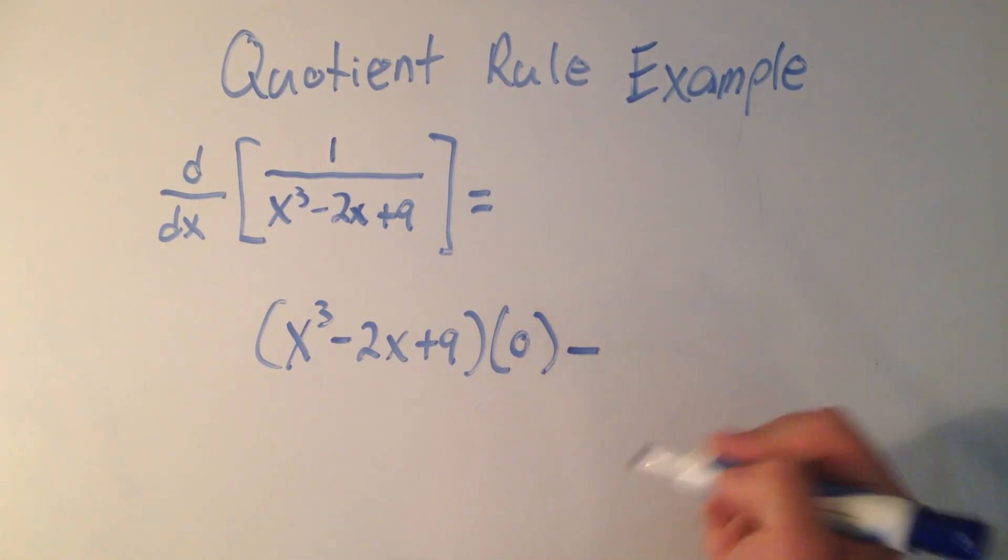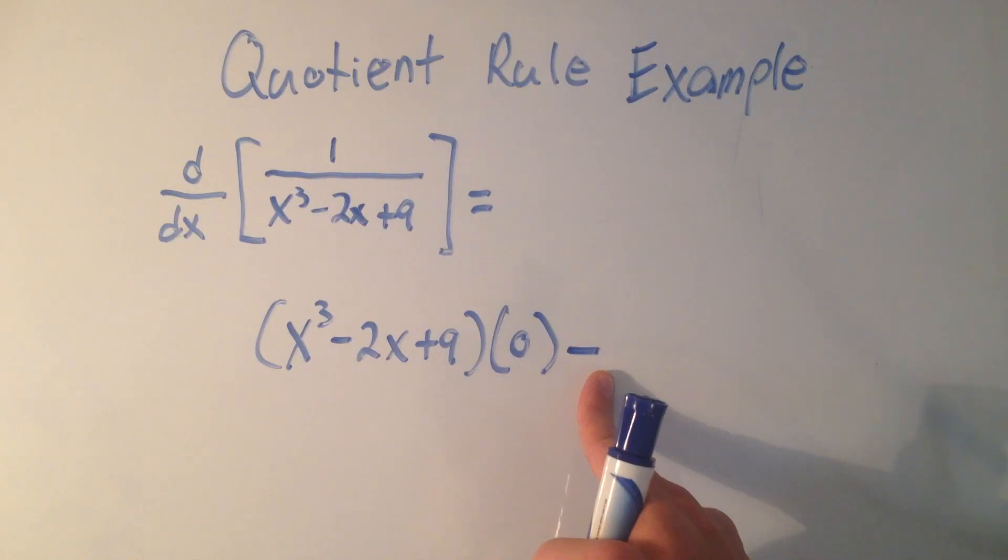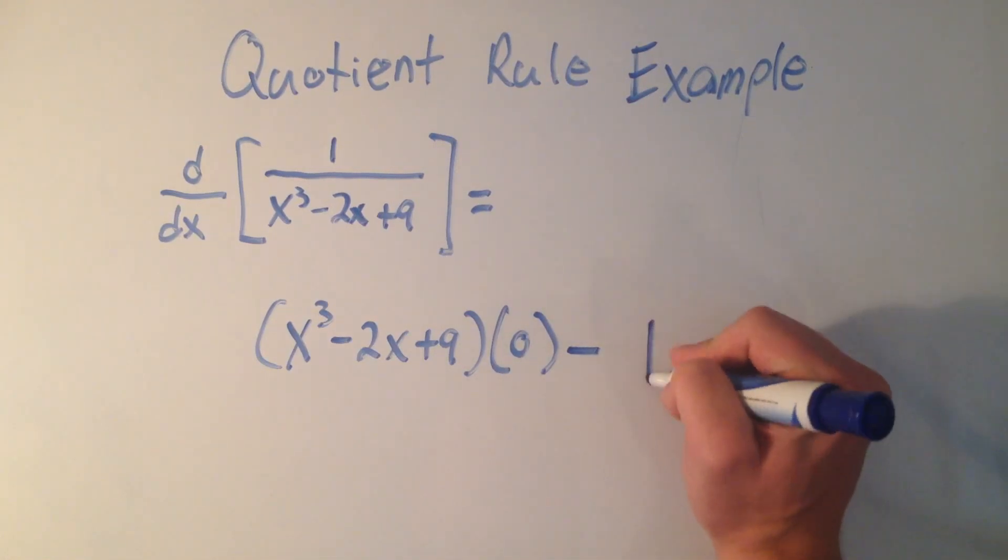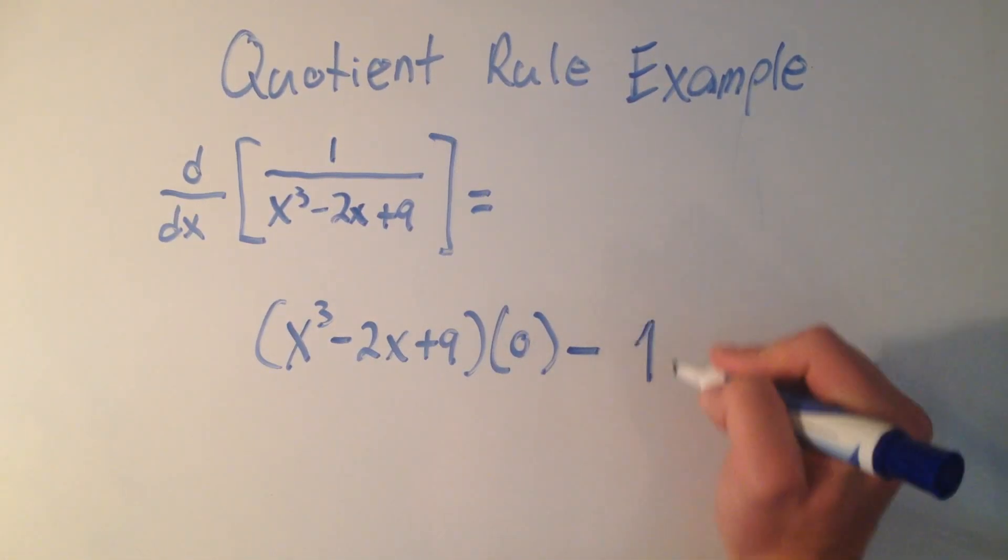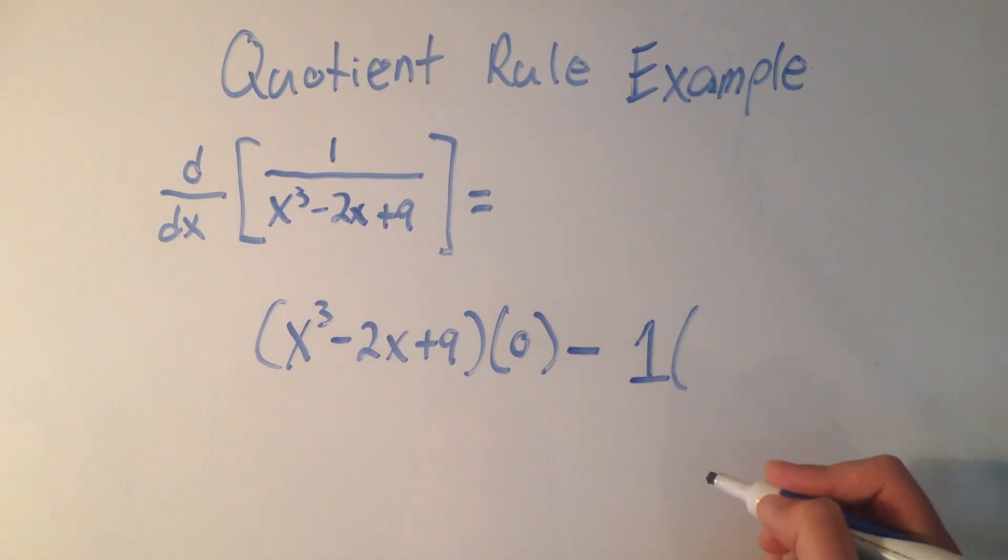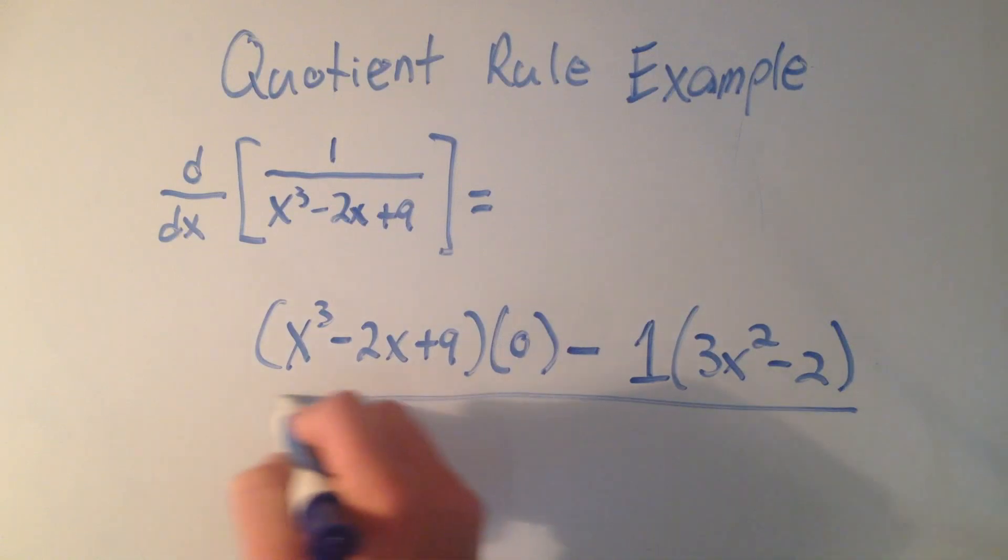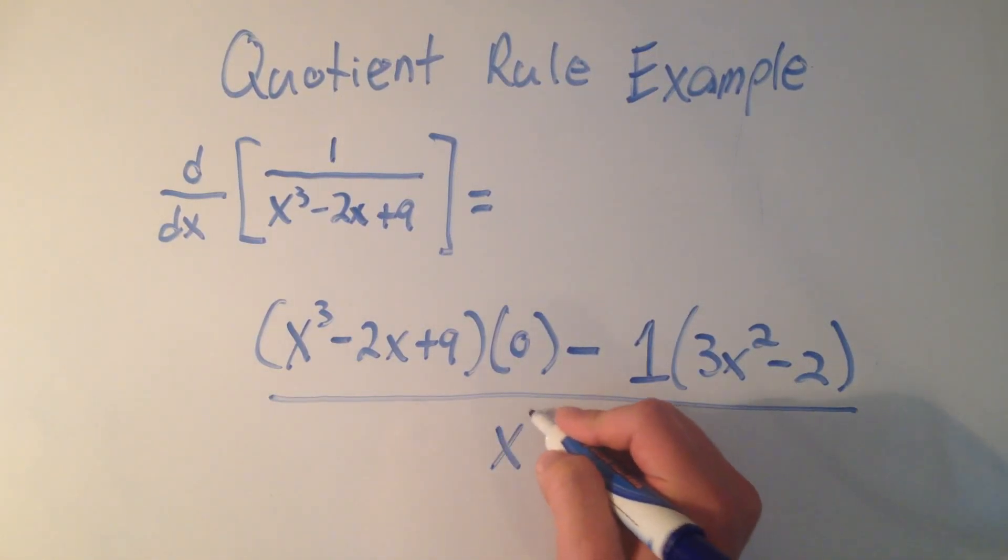Quotient rule says minus, product rule is plus, quotient rule is minus. The top, which is just 1, times the derivative of the bottom. So the derivative of the bottom using the power rule is 3x squared minus 2, all over the entire bottom quantity squared.